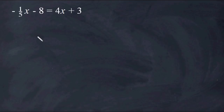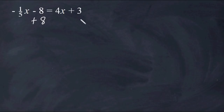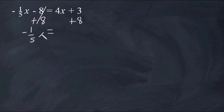In this equation, we have a variable on both sides. So what we're going to do is send the x over to the left-hand side of our equation, and then isolate that x variable. Let's start by taking this minus 8 and moving it over to the right-hand side by doing the inverse, which is adding 8. We cancel out these opposite integers and bring down the negative one-fifth x, and on this side we have 4x plus 11.